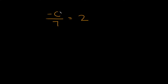Remember, the point is to isolate the variable c by itself. Since we're dividing by 7 here, in order to undo that we're going to multiply by 7. But remember, what you do to one side you do to the other, so we're going to multiply by 7 over here also.